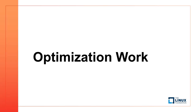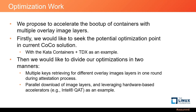In this section, we will introduce our optimization work. Generally, we propose to accelerate the boot-up of containers with multiple overlay image layers. We seek potential optimization points in the current confidential container solution, using Kata Containers with Intel TDX as an example. We divide our optimization into two parts: first, multiple key retrieval for different overlay image layers in one round during the attestation process; second, parallel download of image layers and leveraging hardware-based accelerators such as Intel's QAT.